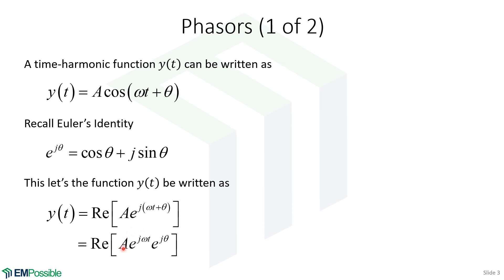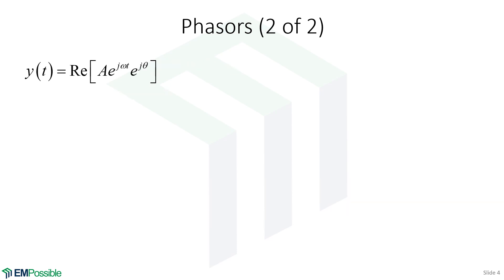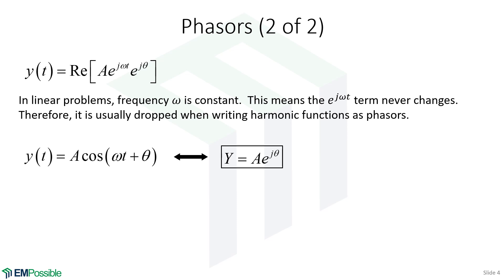The reason we're doing that is we'll end up just dropping this term, because frequency never changes as long as we're analyzing something that is linear. When we are employing phasors, we are almost always analyzing linear things — and certainly in this class, everything we'll analyze is linear. So frequency never changes in a linear system. That means I don't need to constantly carry E to the j omega t through my calculations, because I know ahead of time it's never going to change. So when we write phasors, we tend to get lazy and not bother writing E to the j omega t, and we also don't bother writing the real operation on the outside — both are just implied.